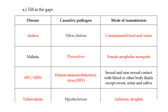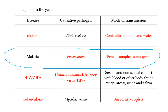The one I want you to pay particular attention to would be malaria. A lot of the time students are able to understand that the disease cholera is caused by Vibrio cholerae and the mode of transmission is contaminated food and water, and HIV — a lot of people get that. But when it comes to malaria, people tend to think that the causative pathogen is the female Anopheles mosquito. No — the mosquito is the mode of transmission. The causative pathogen itself is Plasmodium falciparum, and if you just write Plasmodium, you would also be fine.